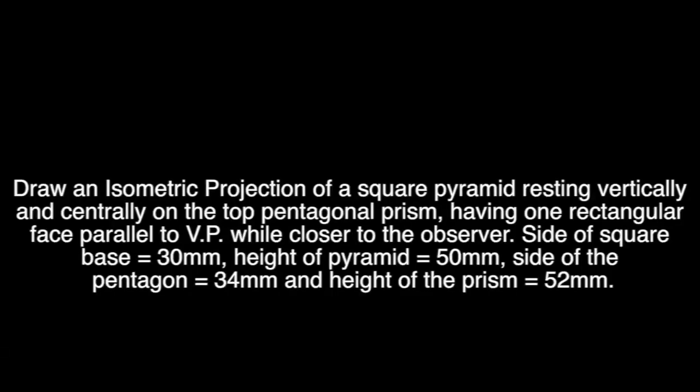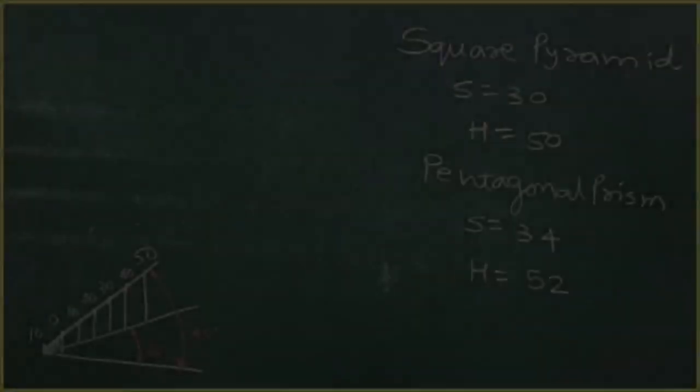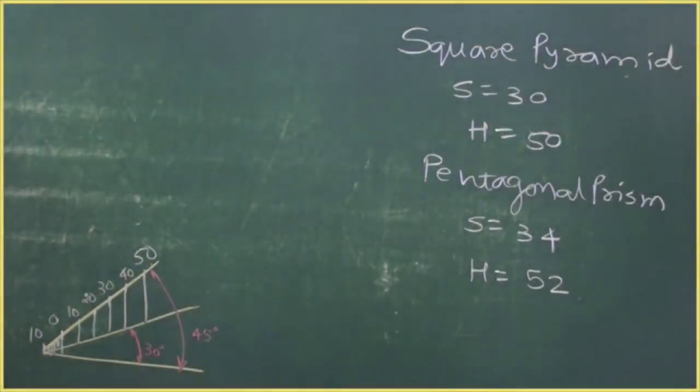Draw an isometric projection of a square pyramid resting vertically and centrally on top of a pentagonal face of a pentagonal prism, having one of the rectangular faces parallel to VP and nearer to the observer. The side of the square base is 30 mm, height of the pyramid is 50 mm, side of the pentagon is 34 mm, and height of the prism is 52 mm. The maximum length is 52.